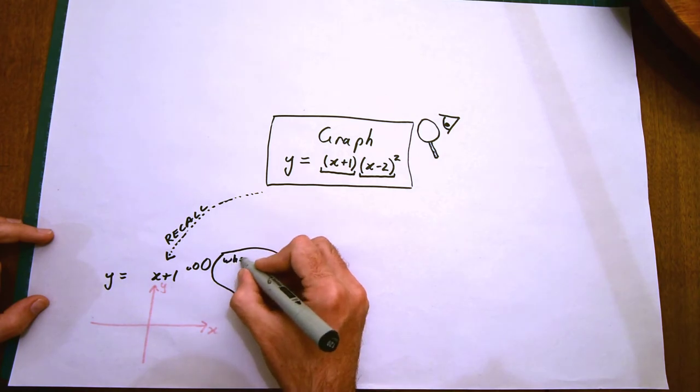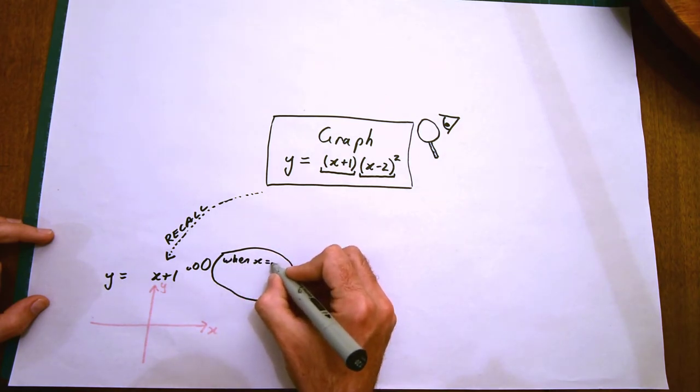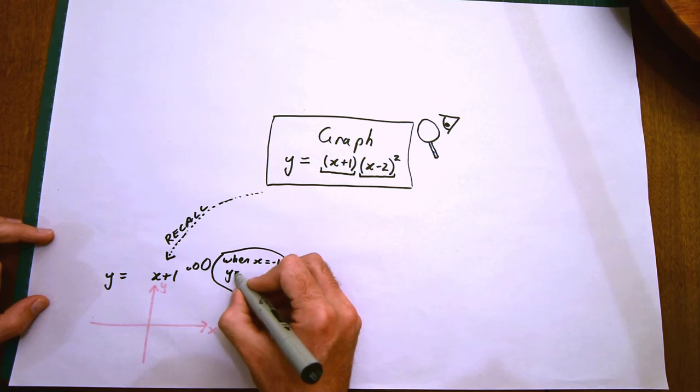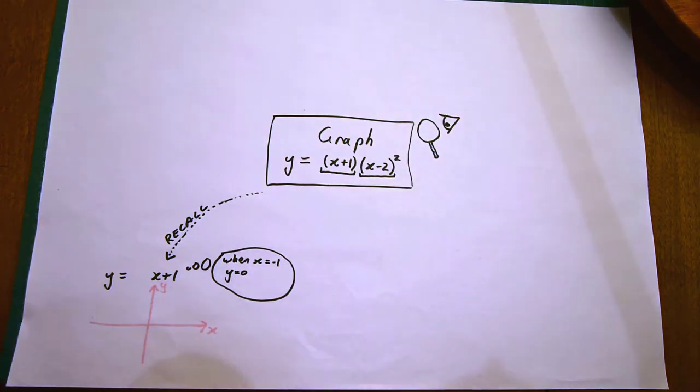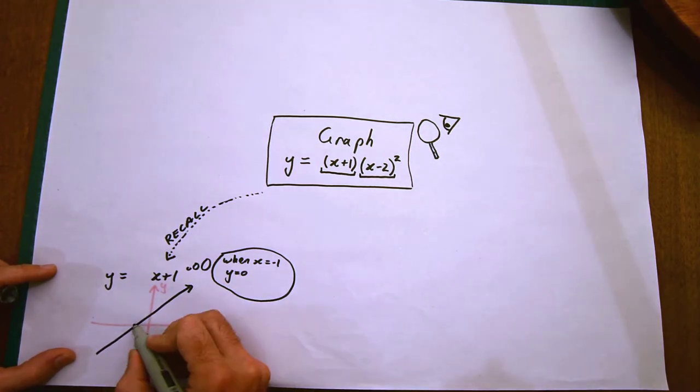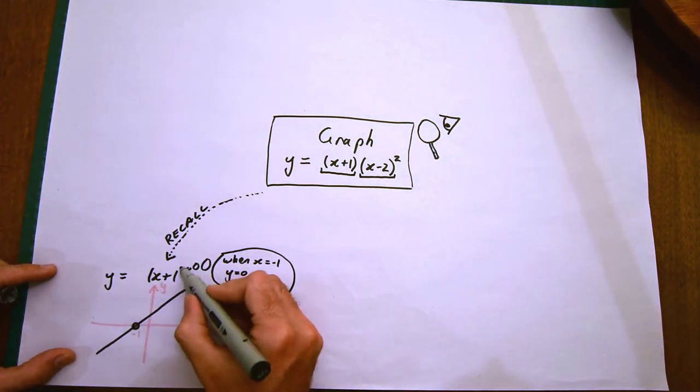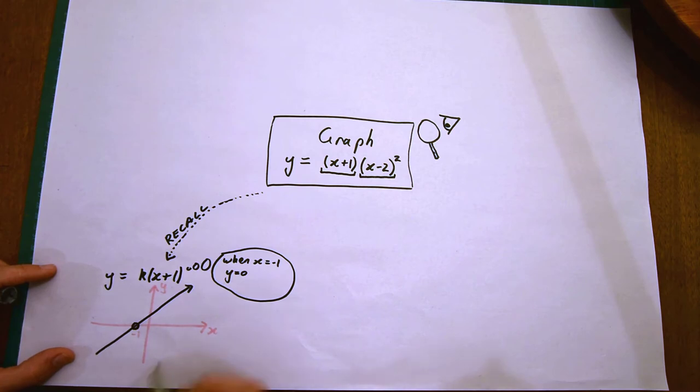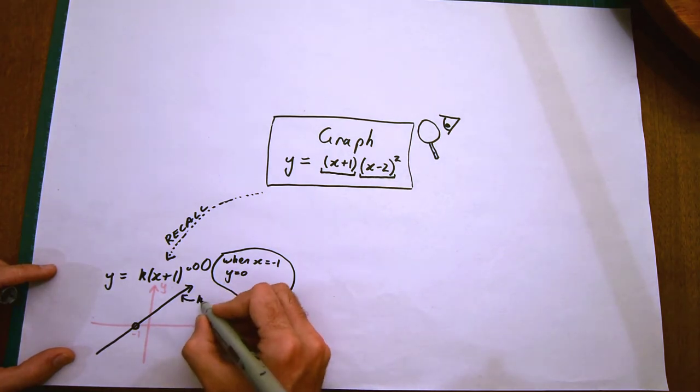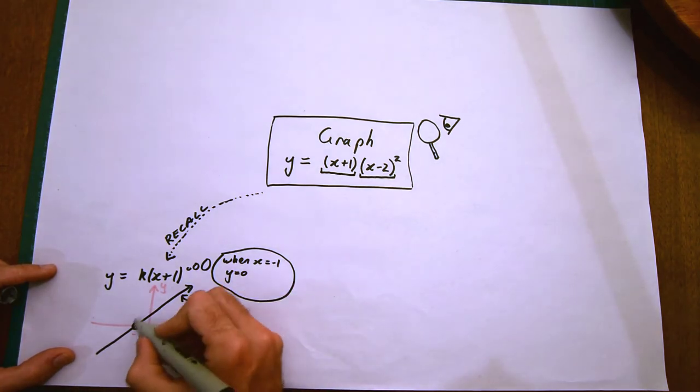It's fairly clear that when x is minus 1, y is 0. Let's clearly mark the x-intercept there. What would happen if we place a number in front of the brackets? What I've drawn corresponds exactly to the case when k equals 1. But what happens if k were a different number?